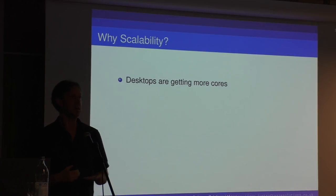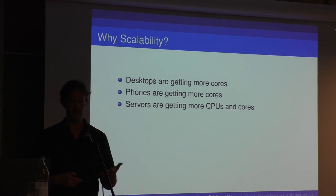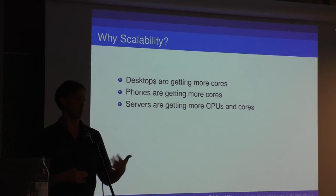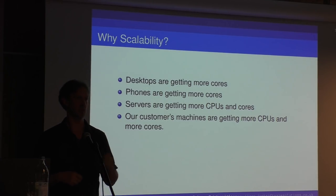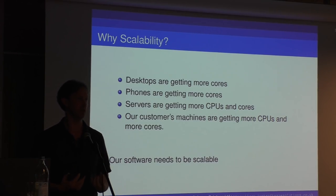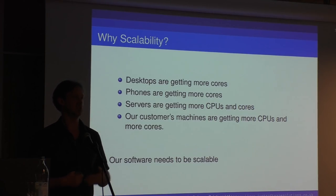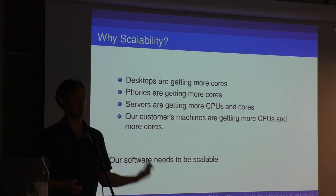Why do we want to do that? It's because our customers are getting better systems as time goes on. Desktops are getting more cores, phones are getting more cores, servers are getting more CPUs and more cores. Fundamentally, our customers' machines are getting more cores and more processors. So we need to think about designing our code — improving the design so that it scales as our target machines scale. You don't want to have to redesign your code just because the customers have upgraded their computers.